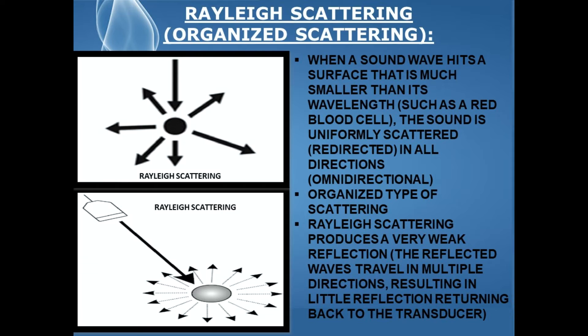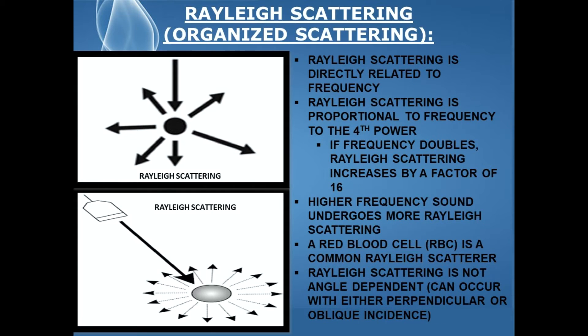Rayleigh scattering produces a very weak reflection. The reflected waves travel in multiple directions, resulting in little reflection returning back to the transducer. Rayleigh scattering is directly related to frequency, and it's proportional to frequency to the fourth power.